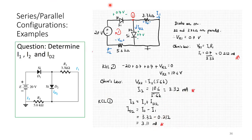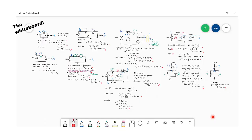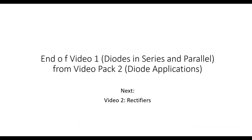Even for a circuit with non-linear elements, you can still apply simple KVL and Ohm's law by replacing each diode with its simple equivalent model. Thank you very much — next lecture we'll move on to rectifiers.